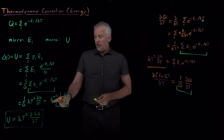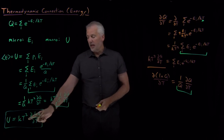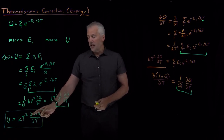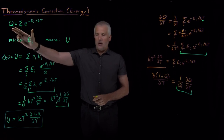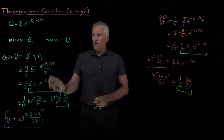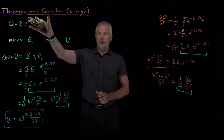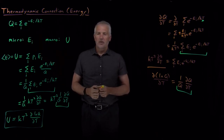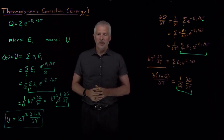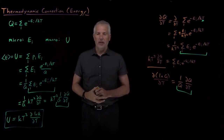Once we have q, that gives us a direct shortcut to calculating the macroscopic energy of the system. That's called a thermodynamic connection — it makes a connection between the partition function and the macroscopic energy. It turns out there's a thermodynamic connection formula like this for other properties as well, not just energy. In the next video lecture, we'll talk about a similar thermodynamic connection formula that will let us calculate the pressure of a system.